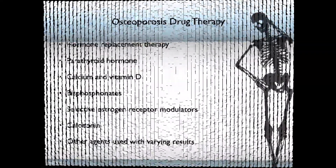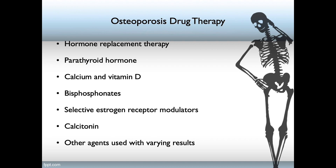Drug therapy includes, but is not limited to, hormone replacement therapy, replacement of parathyroid hormone, calcium and vitamin D, bisphosphonates, selective estrogen receptor modulators, and calcitonins, among others with varying results. For the most part, HRT, parathyroid, calcium, and vitamin D seem to be the treatment of choice for most patients.